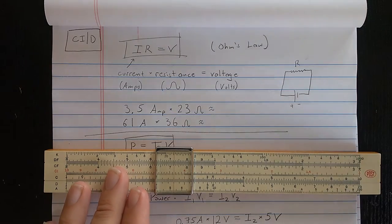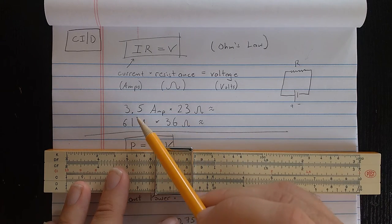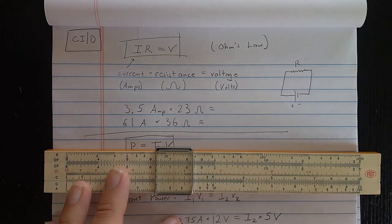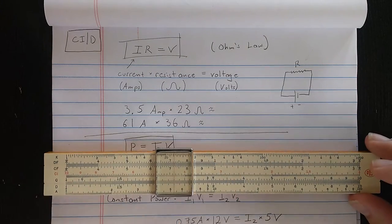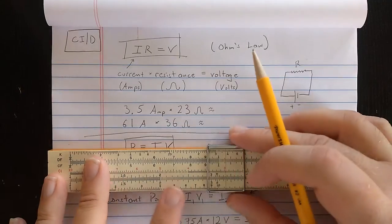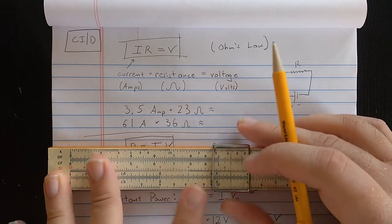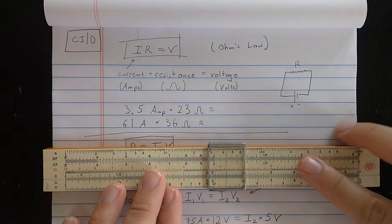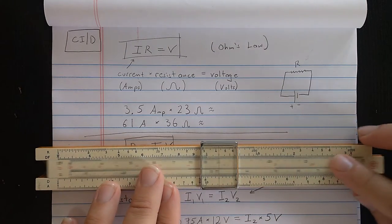So, for example, one way you could solve this problem: if you have a 3.5 amp current and a 23 ohm resistance, what is the voltage? Well, if I find 3.5 here, I can align the second number, the 23, from the CI scale. Now, you'll notice the CI scale is running backwards.